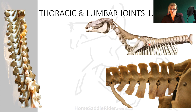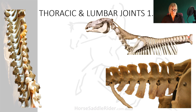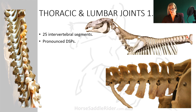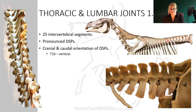There are 25 intervertebral soft tissue joint segments between the cervicothoracic and lumbar sacral vertebrae. Unlike the cervical vertebrae, the thoracic and lumbar vertebrae have pronounced dorsal spinous processes which are angled in opposite directions, except for T16 which is vertical.